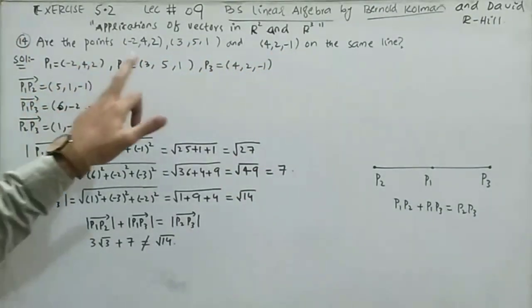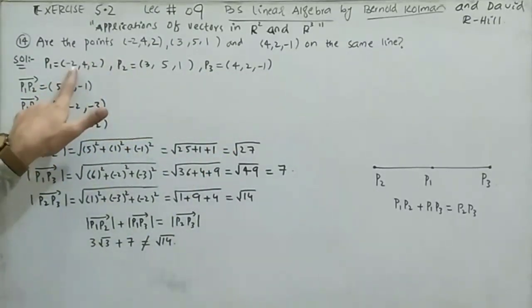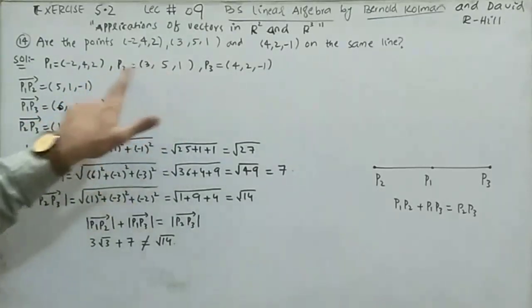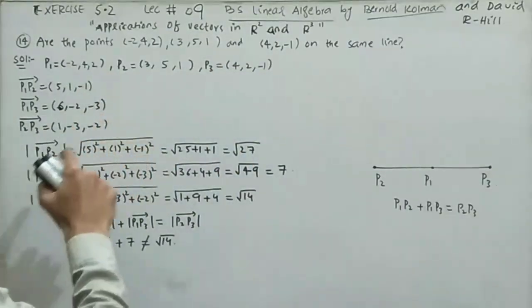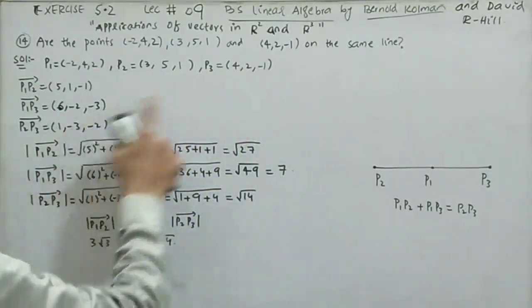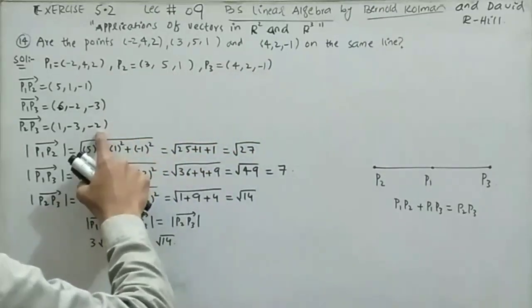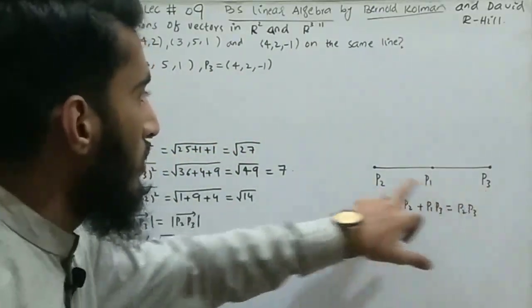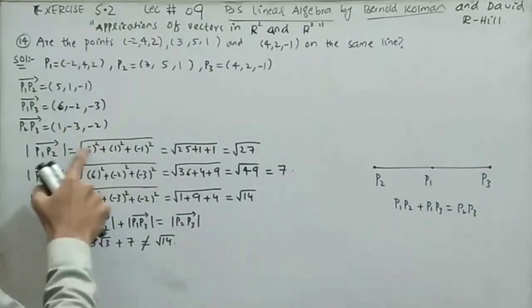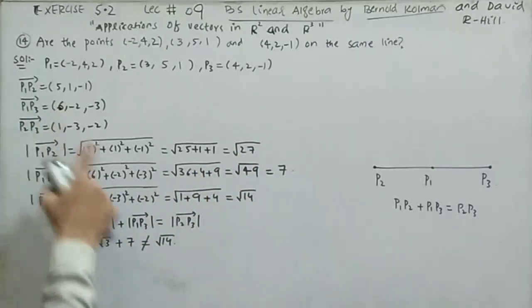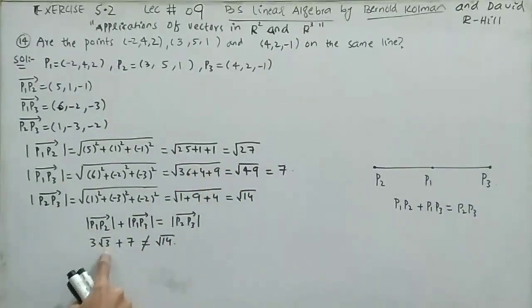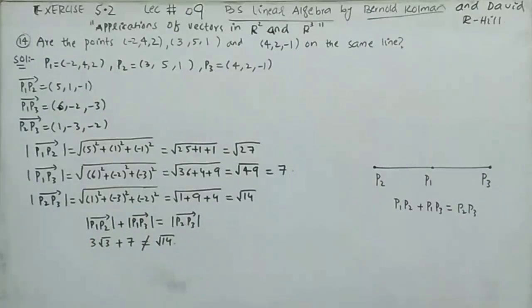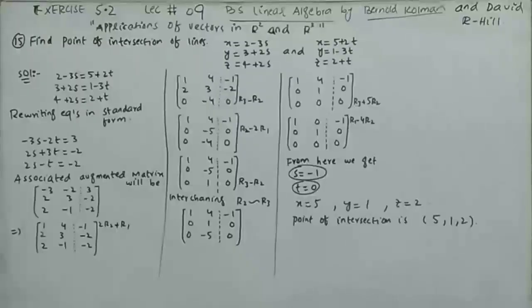Label the points P1, P2, P3. Position vector P1P2 = (3-(-2), 5-4, 1-2) = (5, 1, -1). Position vector P1P3 = (4-(-2), 2-4, -1-2) = (6, -2, -3). Position vector P2P3 = (4-3, 2-5, -1-1) = (1, -3, -2). The magnitude |P1P2| = √27 = 3√3, |P1P3| = 7, |P2P3| = √14. Since 3√3 + 7 ≠ √14, the three points do not lie on the same line.